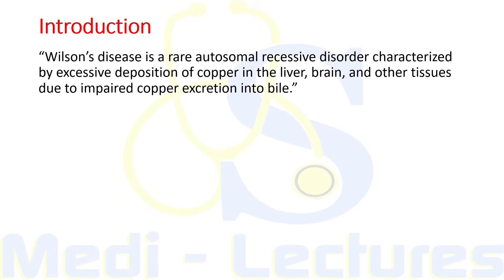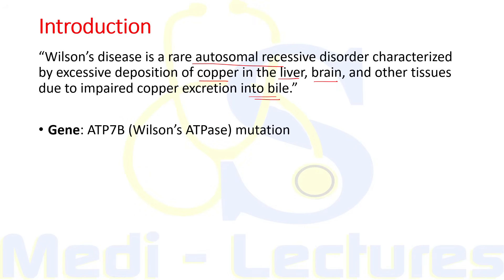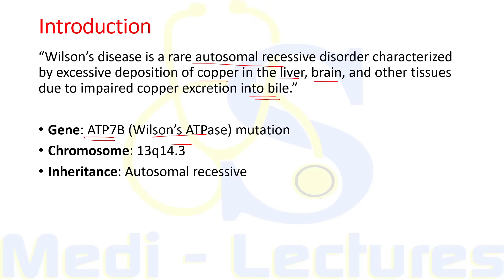Wilson's disease is a rare autosomal recessive disorder characterized by excessive deposition of copper in the liver, brain, and other tissues due to impaired copper excretion into the bile. It occurs due to mutation in the gene ATP7B, also known as Wilson's ATPase - a highly conserved P-type ATPase that normally mediates copper removal from the liver via biliary excretion, thus preventing copper accumulation in the brain.